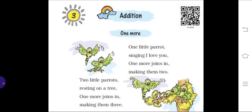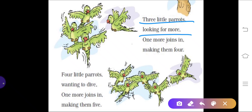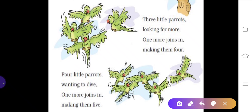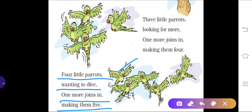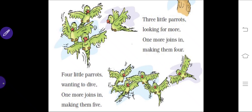Next, three little parrots looking for more — one more joins, making them four. So earlier there were three little parrots — one, two, three — one more joins, so it becomes four. Next, four little parrots wanting to dive — one more joins, making them five. So one, two, three, four and one more joins, making five. This is what we call addition: when we add one more to the given number.